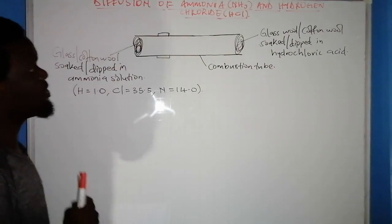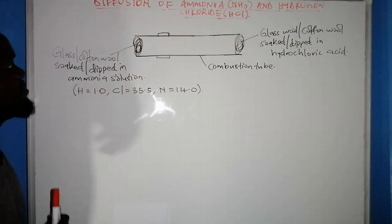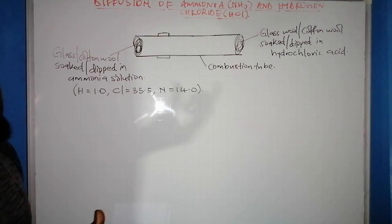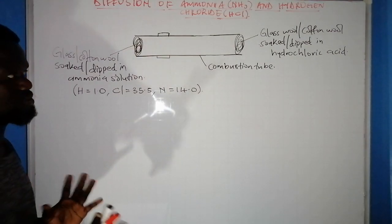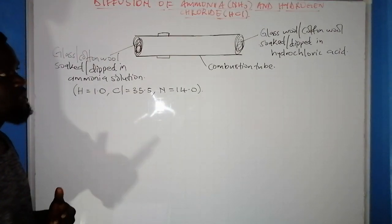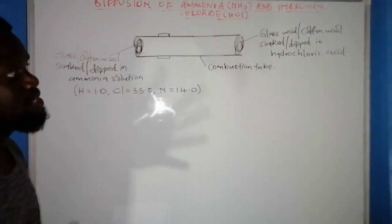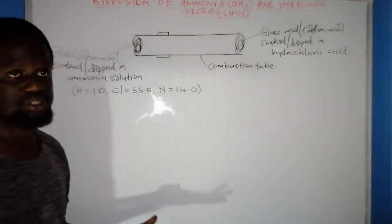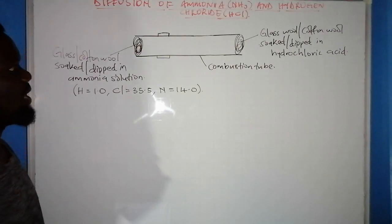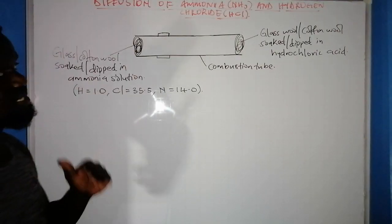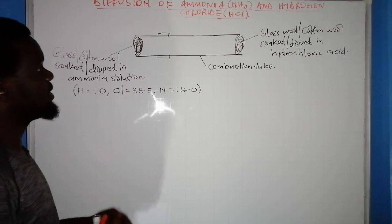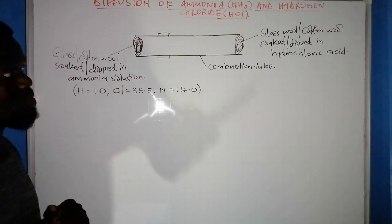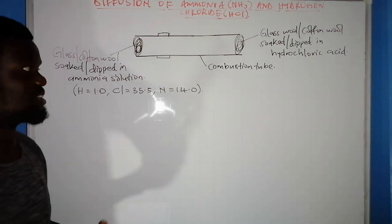In this video I'm going to discuss the diffusion of ammonia and hydrogen chloride and the rate of their diffusion. I've previously talked about gases being in continuous random motion, and I've been covering gas laws. Today I want to talk about the rate of diffusion of ammonia as compared to hydrogen chloride.